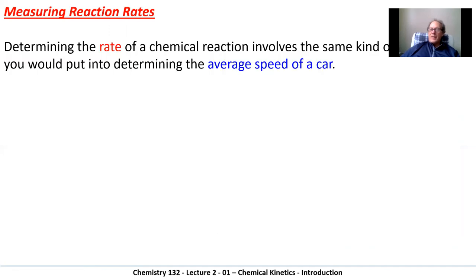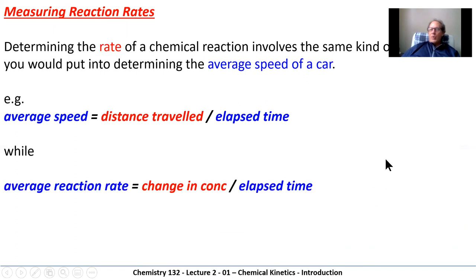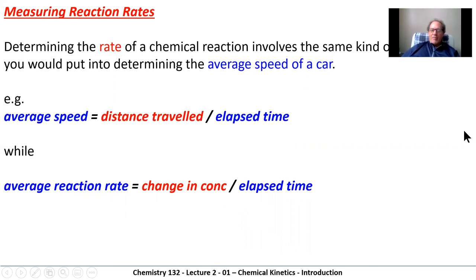We can use an analogy of the speed of a car — we measure the rate at which a car moves by looking at the change in distance over time. In a chemical reaction, instead of distance, we look at the change in concentration, usually in moles per liter (represented as mol/L or capital M). We compare the change in concentration over time, which gives us an average reaction rate.